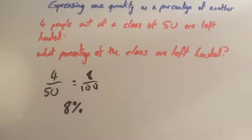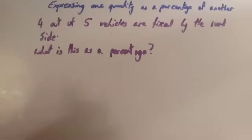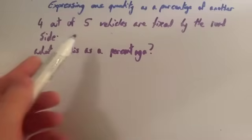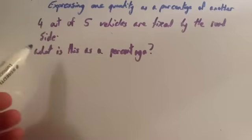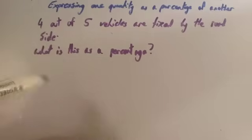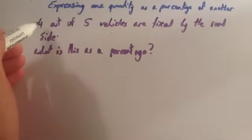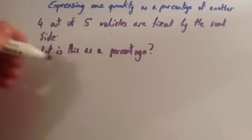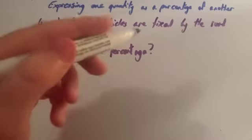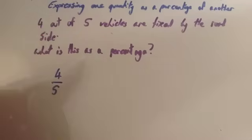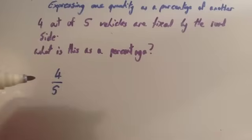Let's look at another question. It's actually a TV ad. It says four out of five vehicles are fixed by the roadside. What is this as a percentage? So four out of five — four-fifths of vehicles are fixed by the roadside. We want to write four-fifths as a percentage.